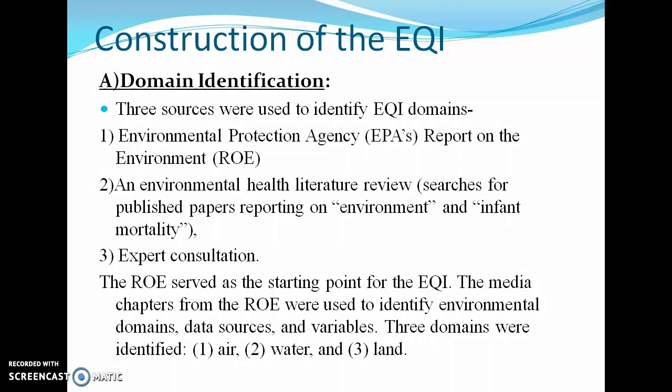Next is construction of EQI — it is a three-step process. The first step is domain identification. Three sources were used to identify EQI domains: first, the Environmental Protection Agency (EPA) report on environment; second, an environmental health literature review — research papers published on environment and infant mortality; and third, expert consultation. The report on environment (ROE) served as a starting point for the EQI, and the media chapters from the ROE were used to identify environmental domains, data sources, and variables.